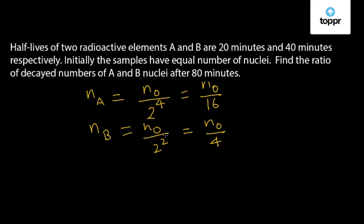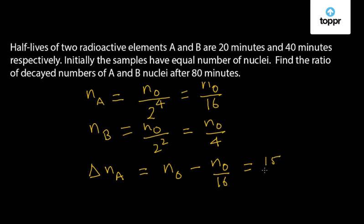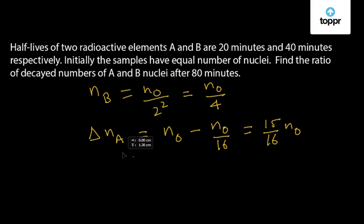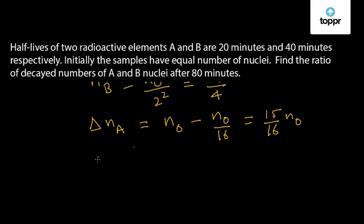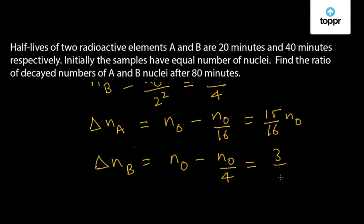Let us find the decayed number of nuclei for A, delta N_A. The decayed number equals the initial number of nuclei minus the remaining number of nuclei, that is N0 minus N0 by 16, which equals 15 by 16 N0. Similarly, the decayed number of nuclei for element B, delta N_B, equals N0 minus N0 by 4, which equals 3 by 4 N0.